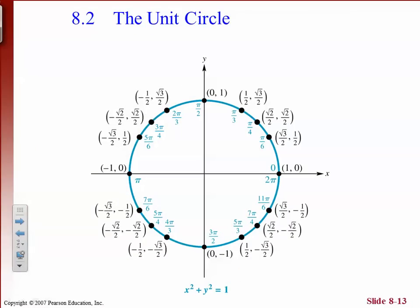This is the unit circle — I'll give you a handout in class. It has all the common radian measures going around the circle and the exact x and y values, the sine and cosine of those angles. The x value goes with cosine and the y value goes with sine. From those you can figure out the other values: tangent is sine over cosine, or y over x.